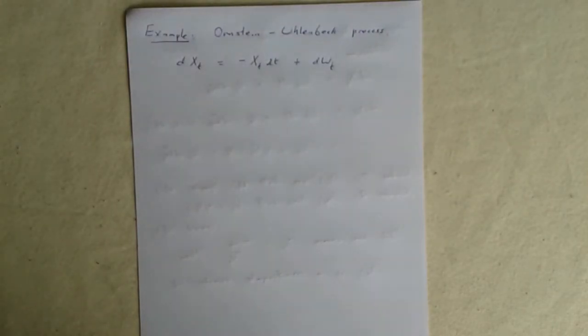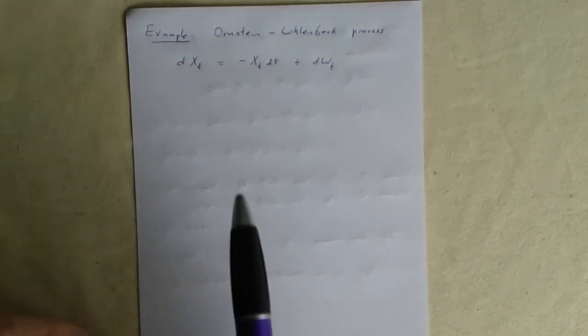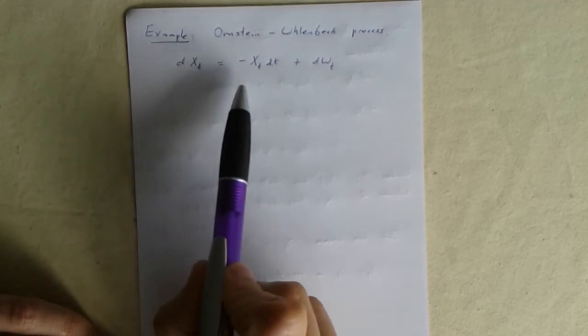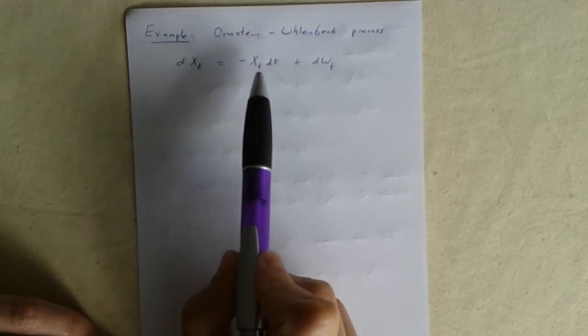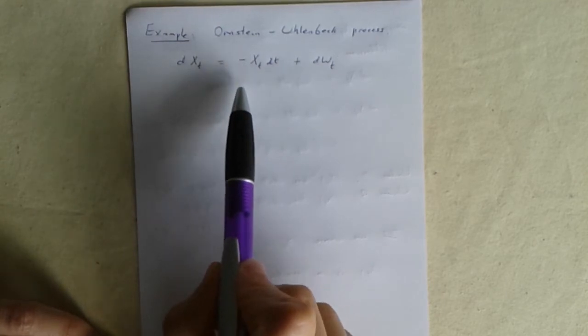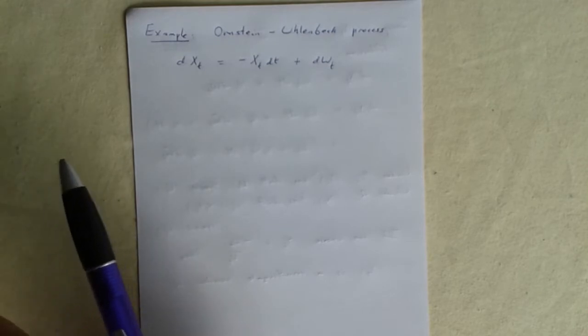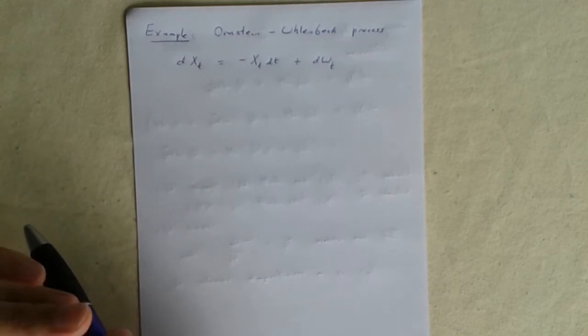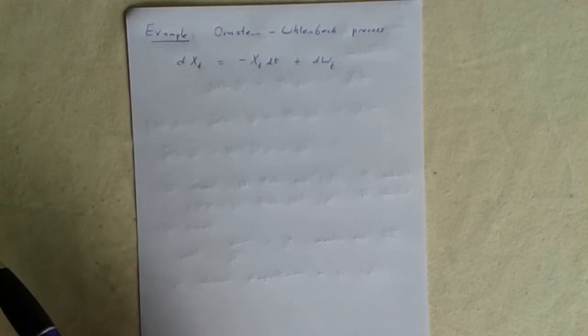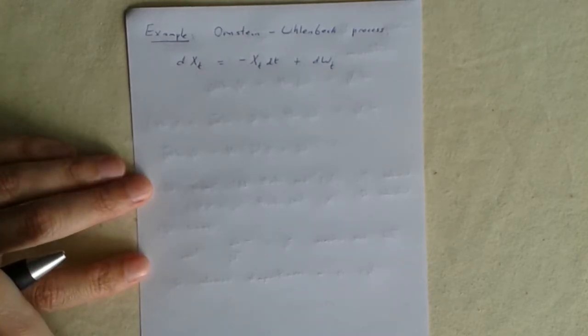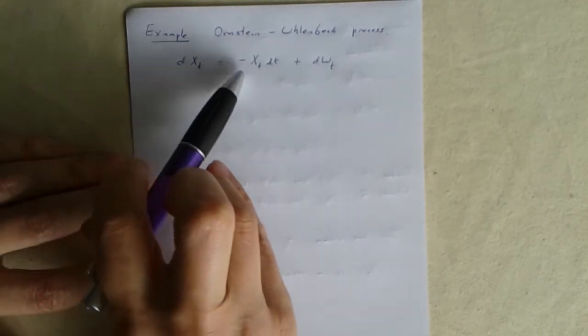As an example, let's look at the Ornstein-Uhlenbeck process. Remember this is an Ito diffusion whose drift is minus the value of the process itself and speed is one. So this is something a bit like a Brownian motion except that it's always tending to drift back towards zero. If it's positive it's got negative drift, if it's negative it's got positive drift.